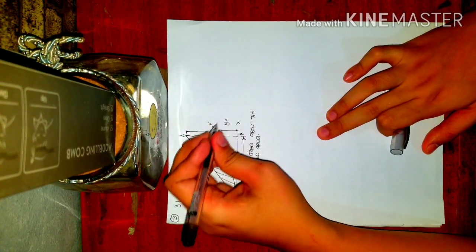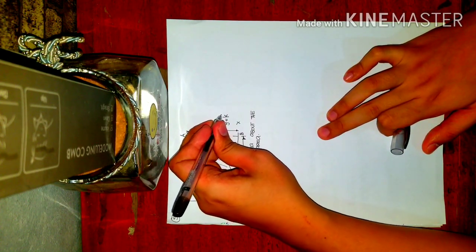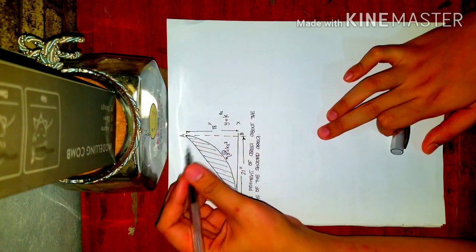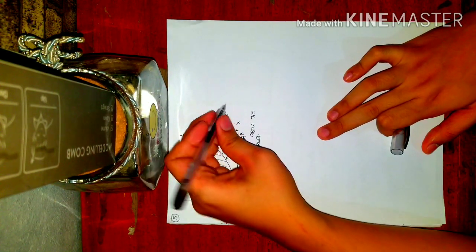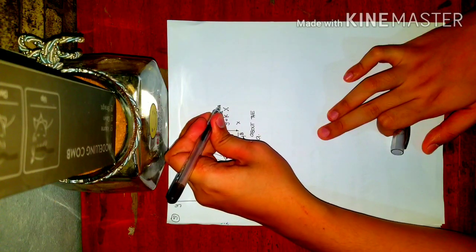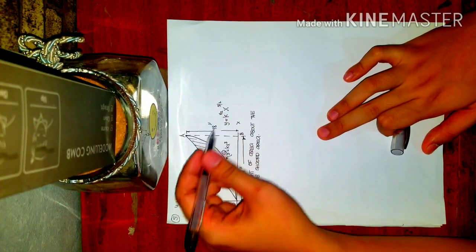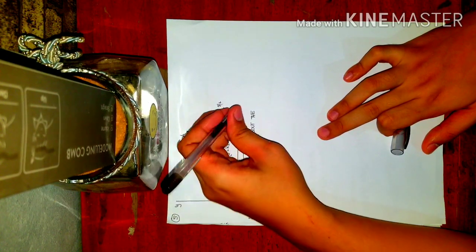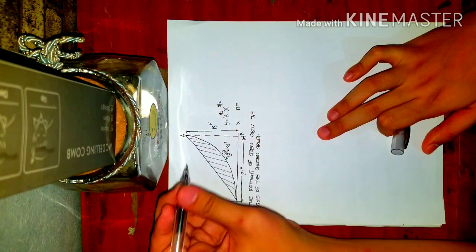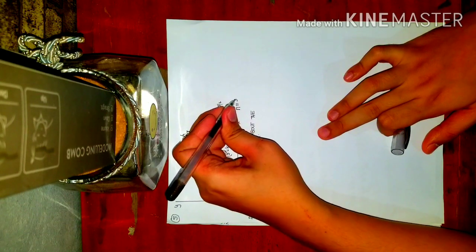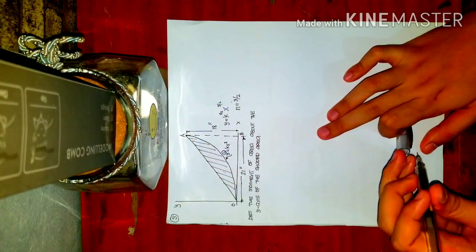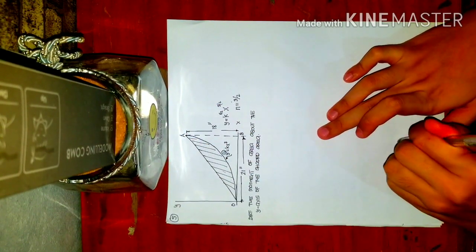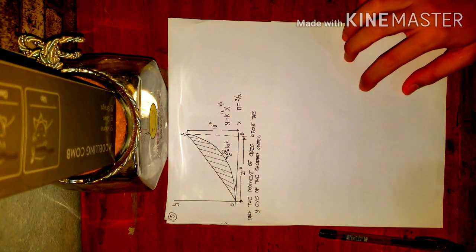So we can also say that y equals k times x to the power of three halves. This k constant value, we don't really care about it. What we need is the degree, or the value of n of our x. So the degree of the curve, or the n, equals three halves.